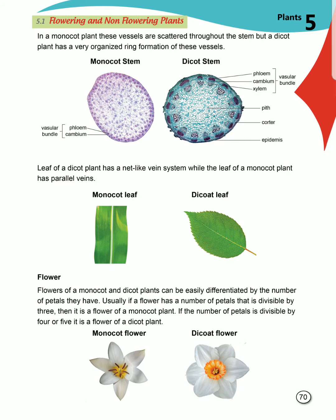As you can see in the pictures, in monocot stem the tissues present are phloem and xylem, while in dicot stem the tissues present are phloem, cambium, and xylem. So the internal structure of the stem is different between monocot and dicot plants.